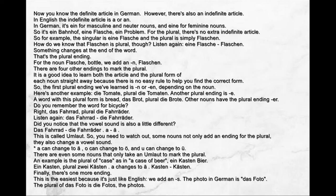How do we know that 'Flaschen' is plural? Listen again: 'eine Flasche' — 'Flaschen'. Something changes at the end of the word — that's the plural ending. For the noun 'Flasche', meaning 'bottle', we add '-en'. There are four other endings to mark the plural. It is a good idea to learn both the article and the plural form of each noun straight away, because there is no easy rule to help you find the correct form. The first plural ending we've learned is '-n' or '-en', depending on the noun.